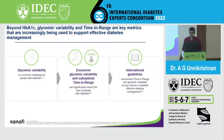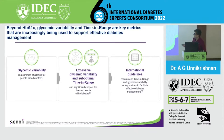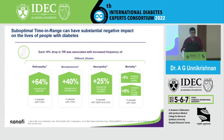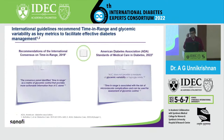Beyond HbA1c, time in range is a very important metric because it detects glycemic variability. It also tells us the time below range, which is very important, and it highlights how glycemic variability and suboptimal time in range can significantly impact people with diabetes. Guidelines also support this. A lower time in range is associated with a higher risk of retinopathy, microalbuminuria, neuropathy, and mortality. International guidelines recommend time in range as a key metric for effective diabetes management.